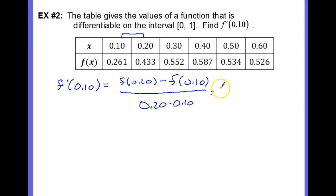And then substituting, we have 0.433 minus 0.261 over 0.20 minus 0.10. And this is going to be approximately 1.72 when we calculate that derivative.